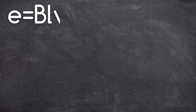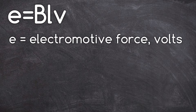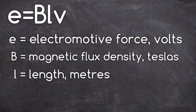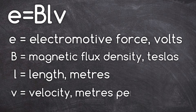Let's get our heads around this new formula. We've got E equals BLV. There's no mathematical operator between B, L, and V, so when written together that means multiply them. E is electromotive force — a type of voltage — measured in volts; it's the voltage created inside the conductor when we move it through the magnetic field. B is magnetic flux density, measured in teslas. L is the length of conductor passing through the magnetic field, measured in meters. And V is velocity, measured in meters per second.